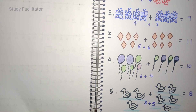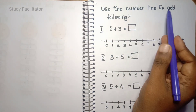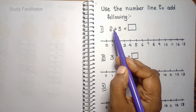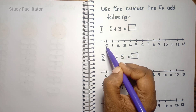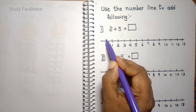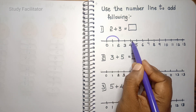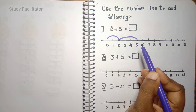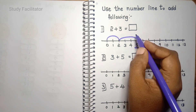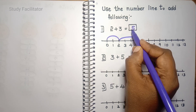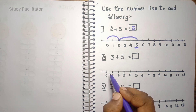Let us see another worksheet. This is the number line. Use the number line to add the following numbers. 2 plus 3: we start at 0, 1, 2, then count 1, 2, 3 — that gives us 5. 2 plus 3 is 5.